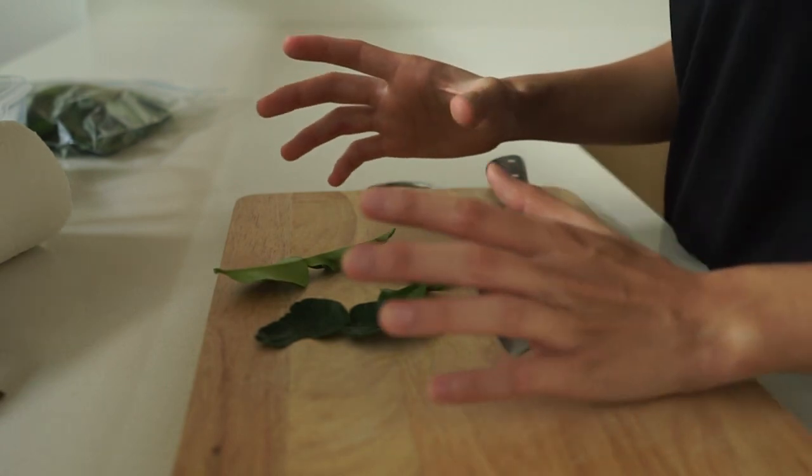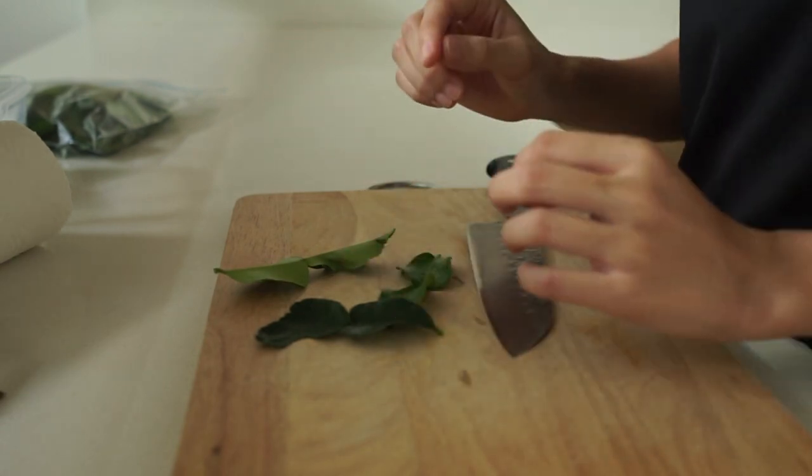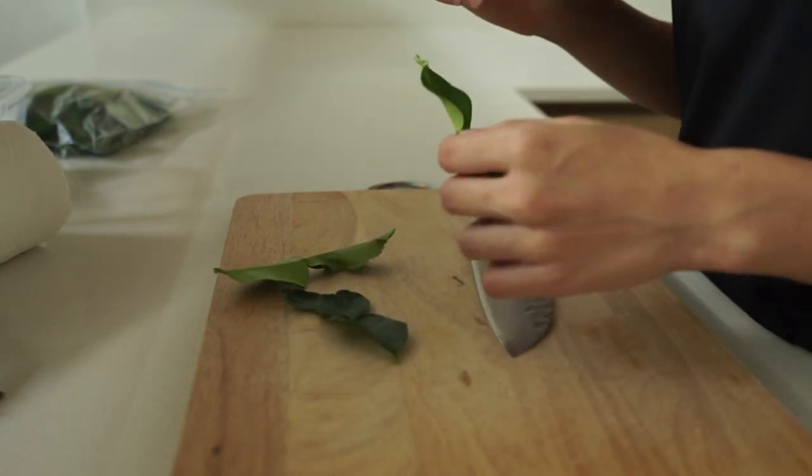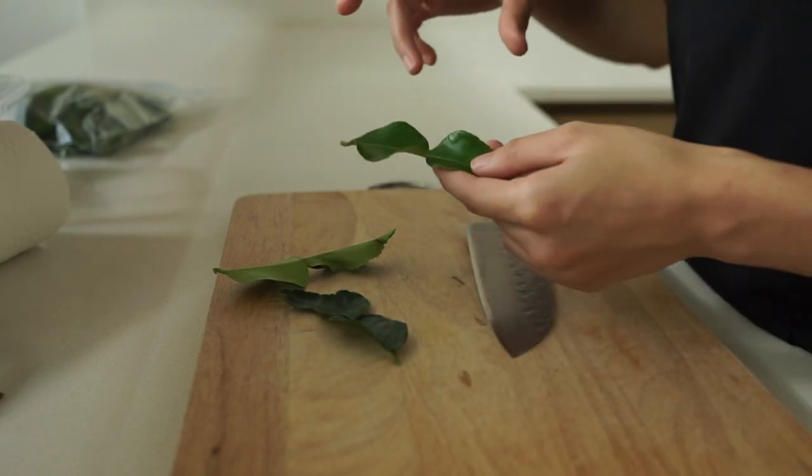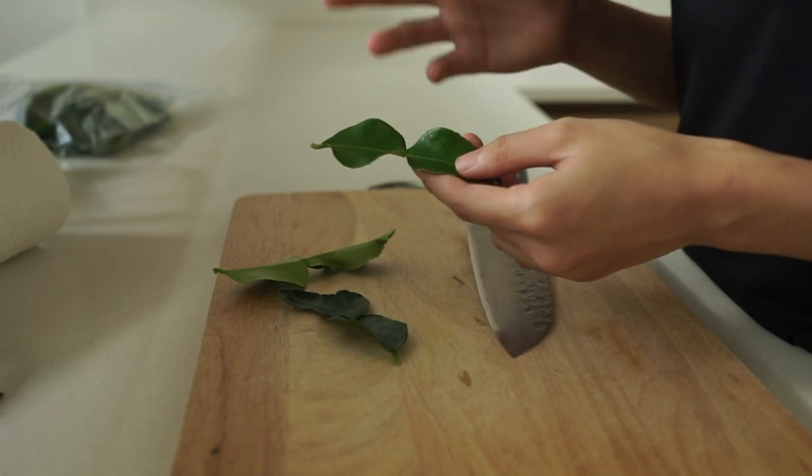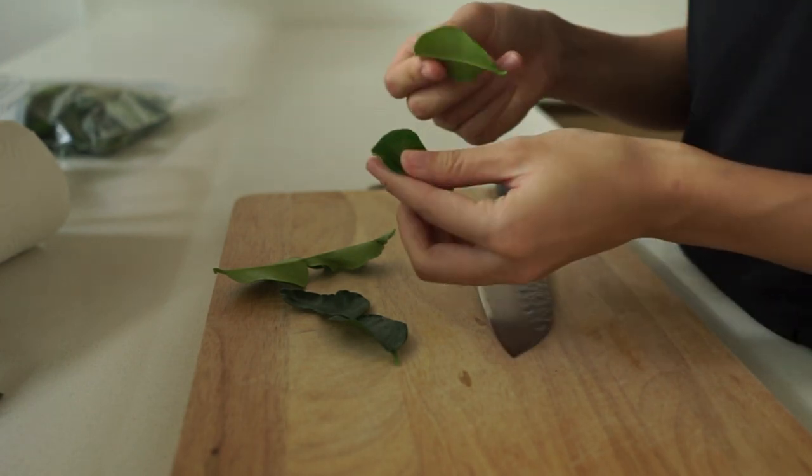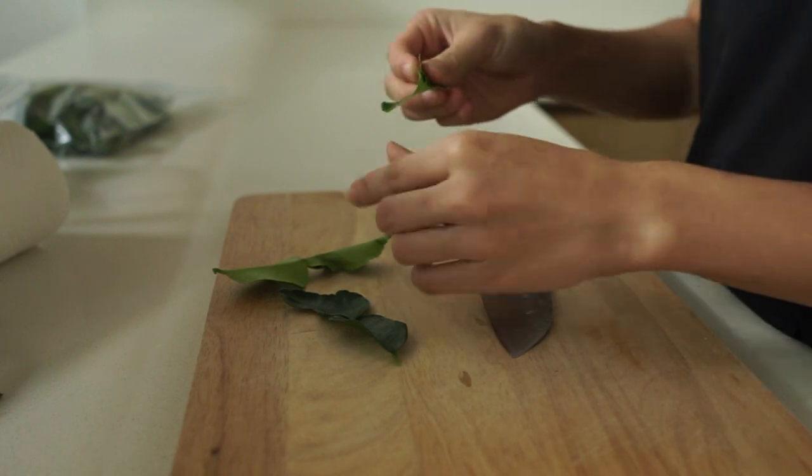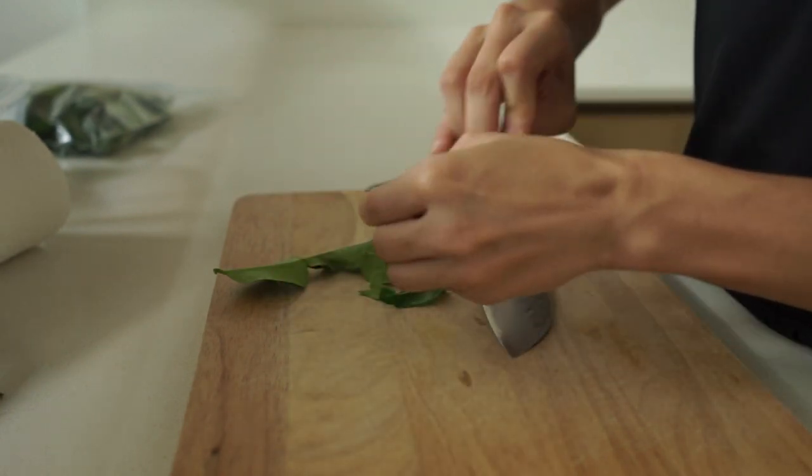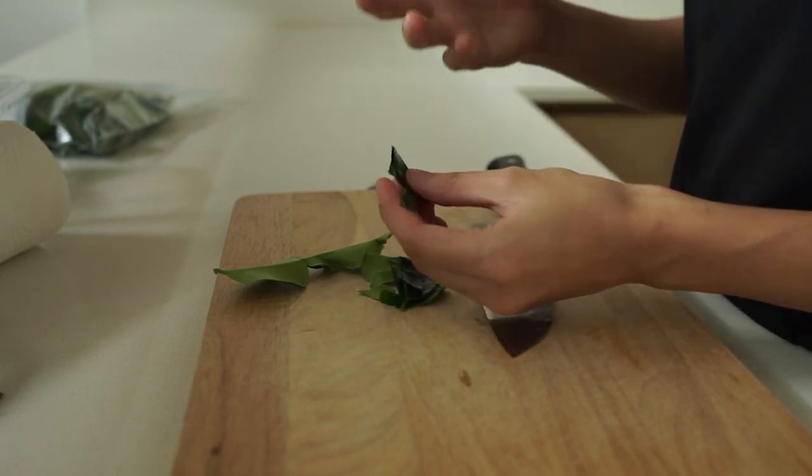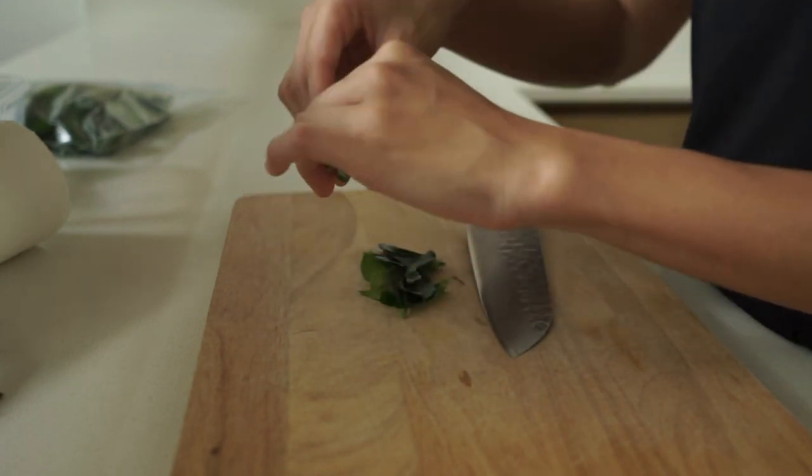All right, let me show you the first method which is the easiest one. This one is very good if you want to add the leaves into soup and just to get the aroma from it without eating them. You can just simply break them into smaller pieces like this easily with your hand. It doesn't have to be too small, you just want it to break so that the aroma can come out of the leaves.